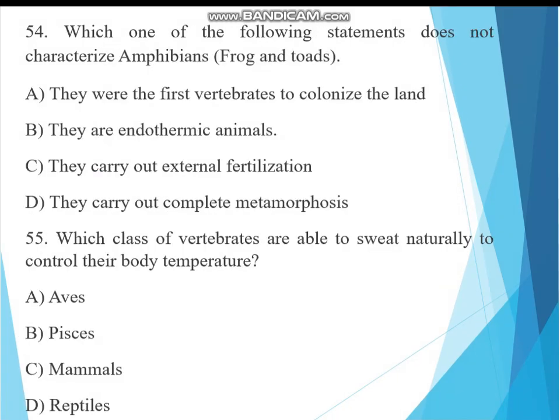Question 54. Which of the following statements does not characterize amphibians, frogs and toads? A. They were the first vertebrates to colonize the land. B. They are endothermic animals. C. They carry out external fertilization. D. They carry out complete metamorphosis. The answer is B, not characterized as endothermic animals. It is not characteristic of amphibians because amphibians are cold-blooded animals, they are ectothermic animals.